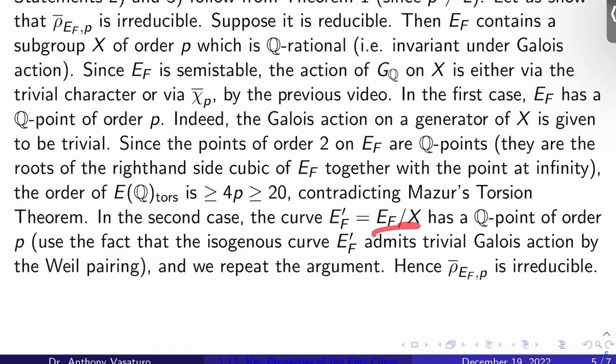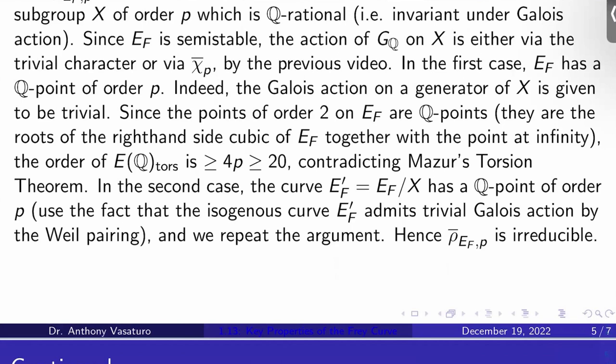Don't worry about that. So just repeat the above argument on this isogenous elliptic curve. Basically, kill off the part where the Galois action is cyclotomic, and you've got kind of an elliptic curve left over where the Galois action is trivial, and you can repeat. So there's a contradiction in either case. ρ̄_E_F,P is irreducible.